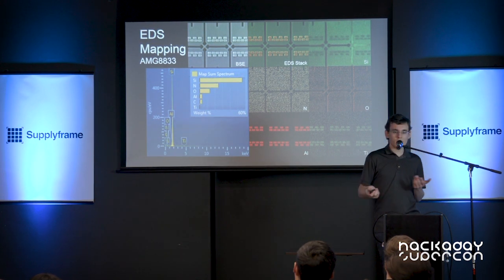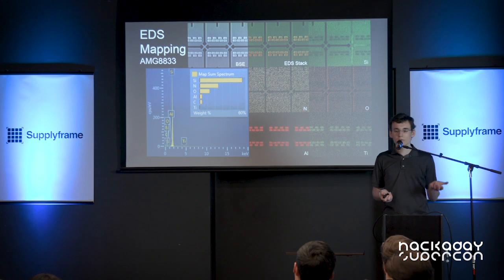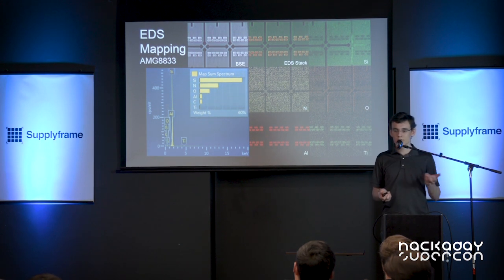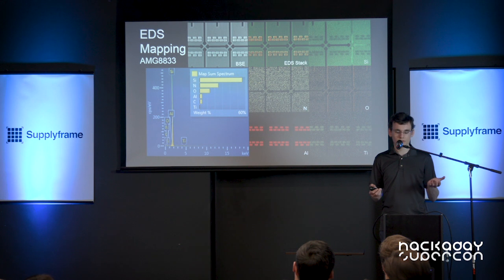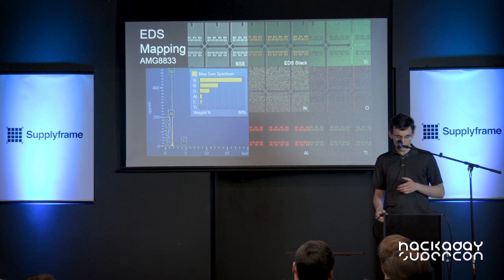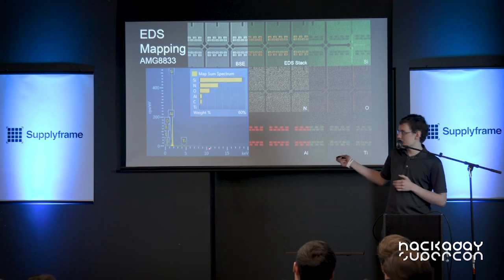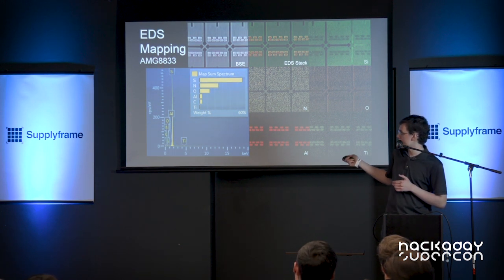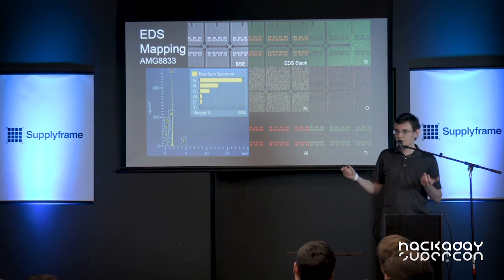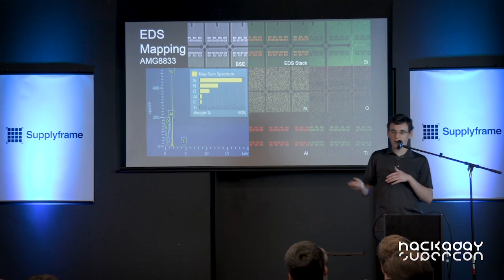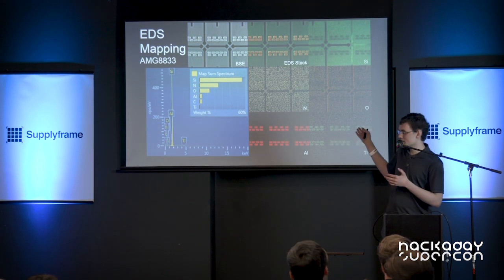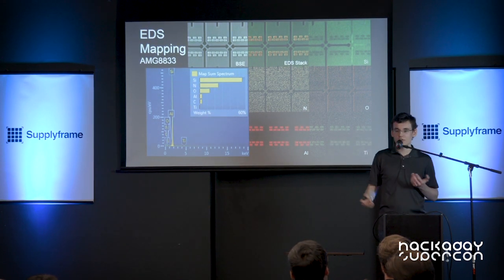We can also see quite a bit of aluminum and titanium focused on those really bright spots in the backscatter electron image. That's not surprising at all — aluminum is commonly used as a conductor in a semiconductor, and titanium is used to get the aluminum to stick to whatever you want it to. So now we can combine backscatter and EDS and start reverse engineering some stuff with it.